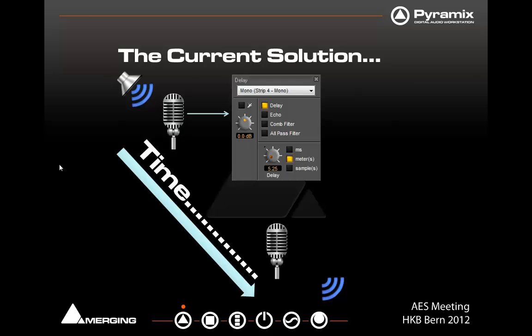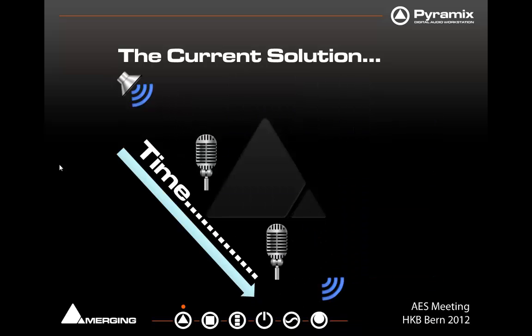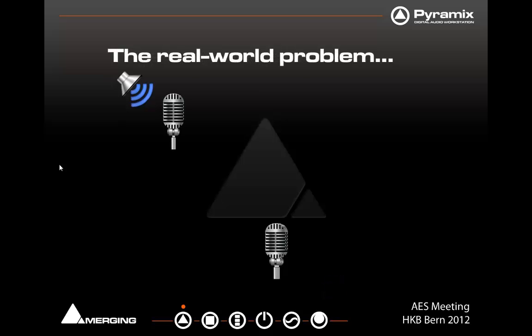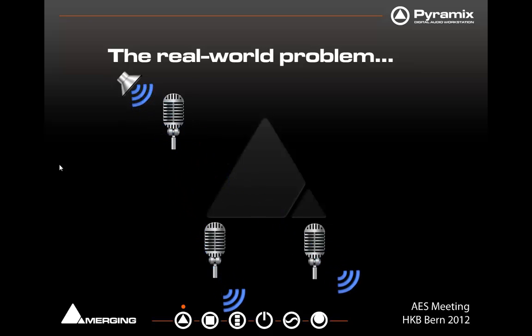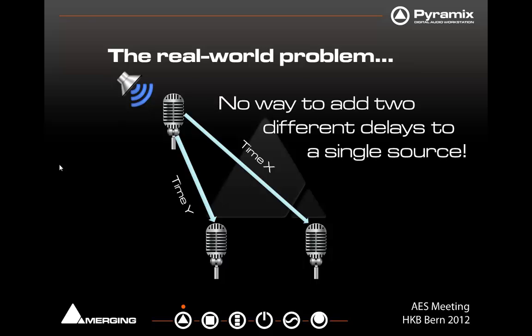The current solution for this is to put that initial one through a delay, then through the panner, and finally push them out to a stereo mix — that would create the offset between the two. The problem now is that most direct microphones are followed up in the rear with a stereo room mic. The problem with having a stereo room mic is you've got two different arrival times — one to the left mic and one to the right mic — with difference to the direct mic. There's no way to add two different delays to a single source.